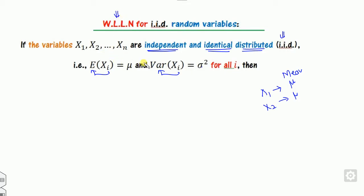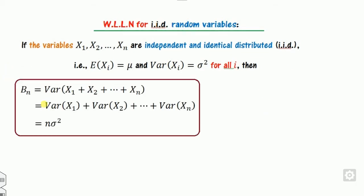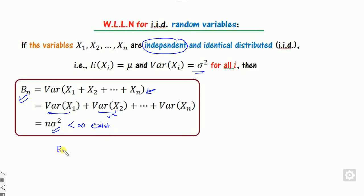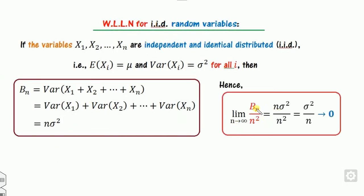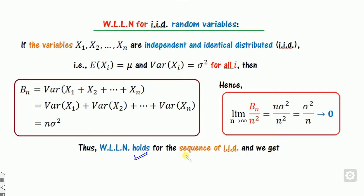You can check whether the weak law of large numbers holds for IID. You must verify three conditions: first, the means exist (finite — satisfied); second, b_n is finite — since the variables are independent, b_n = sum of variances = n*sigma², which is finite; third, b_n/n² = sigma²/n → 0 as n → infinity. Since all three conditions are satisfied, the weak law of large numbers always holds for IID sequences.